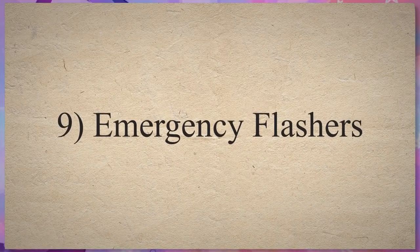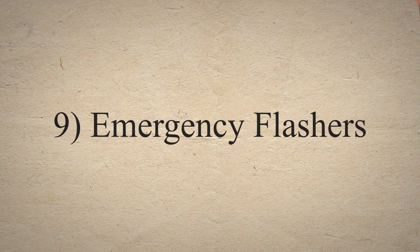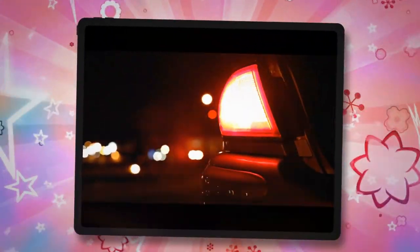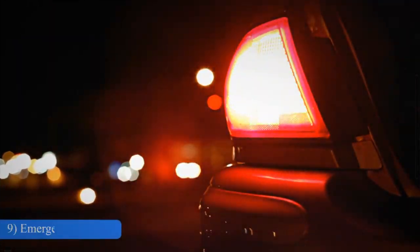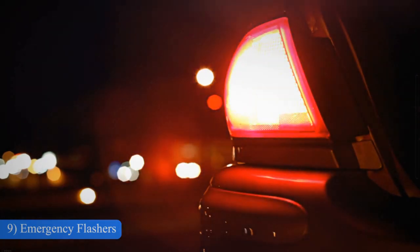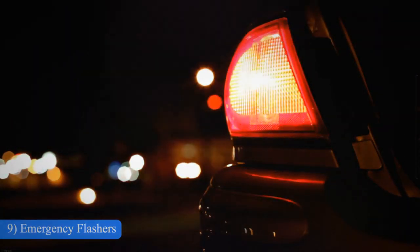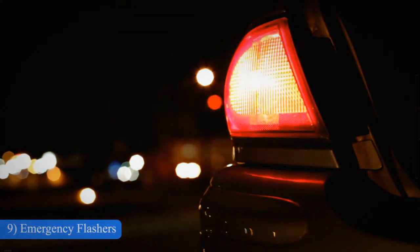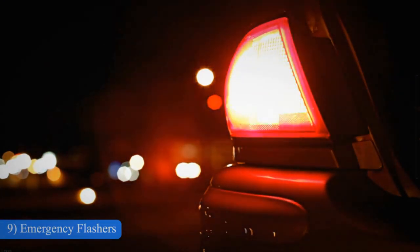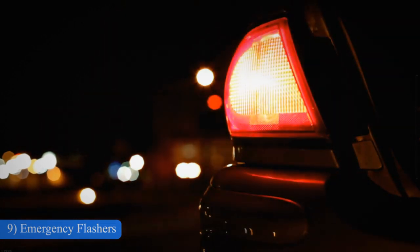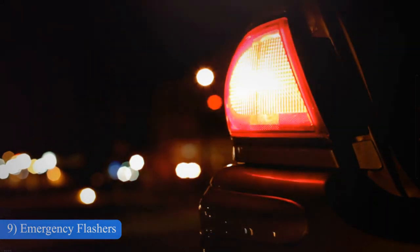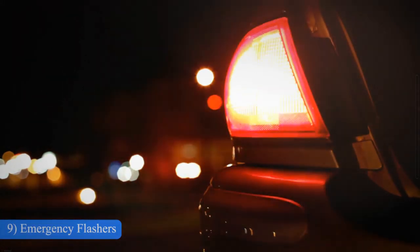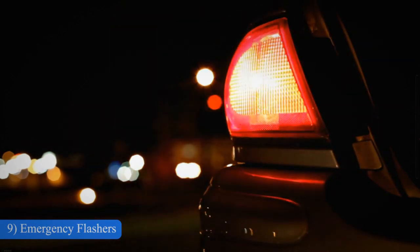9. Emergency Flashers. An emergency warning flasher is a visible warning light installed on the vehicle's front dashboard. These flashers are activated as the driver presses the emergency warning light switch. These lights alert other drivers to an emergency in which you may be in, or that your car is parked on the side of the road. All turn signal lights switch on when you start your emergency flasher.